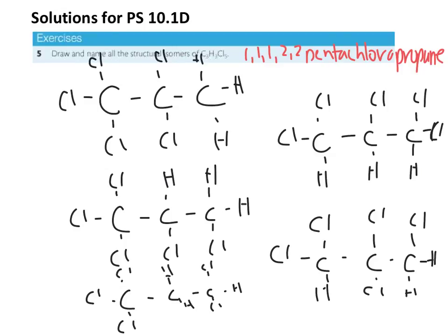So with this one, my numbering would be 1, 1, 1, 2, 3 pentachloropropane. This one would be 1, 1, 1, 3, 3. This would be 1, 1, 1, 2, 2, 3. And this one would be 1, 1, 2, 3, 3. So they each have their slightly different name and slightly different structure.